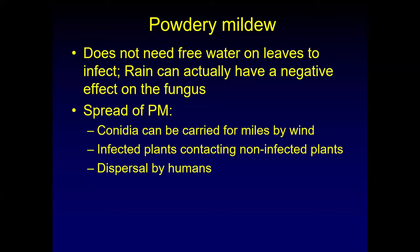Powdery mildew does not need free water on the leaves to infect, and if you had a very rainy season it can actually have negative effects on the fungus. But I would still not recommend going to overhead irrigation because you might get rid of the powdery mildew but you invite every other fungal pathogen to come along. So how is powdery mildew spread? It's spread by conidia, which are asexual spores that are carried by the wind for miles. Infected plants contact non-infected plants — the spores lie very loosely on the surface of the leaves, so any wind movement or plants brushing against each other will move the spores from one plant to the next.